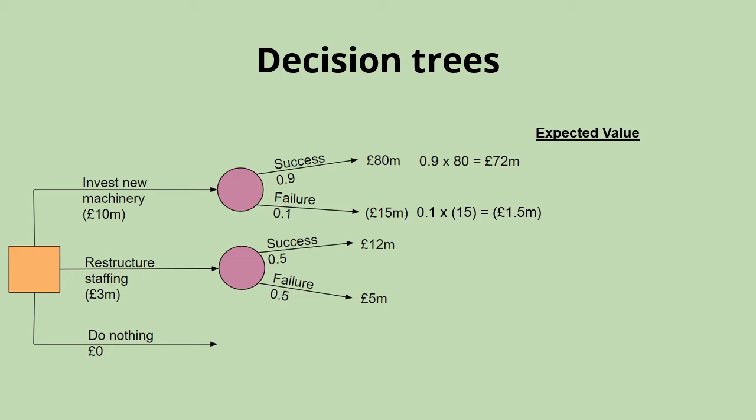To get the expected value for the invest in new machinery option, we add those two together. In this case, 72 adding the negative 1.5 would give us 70.5 million.